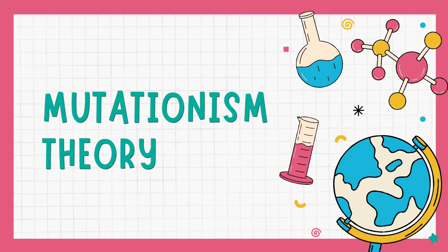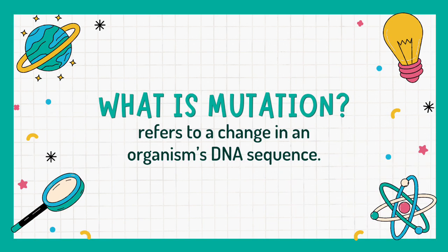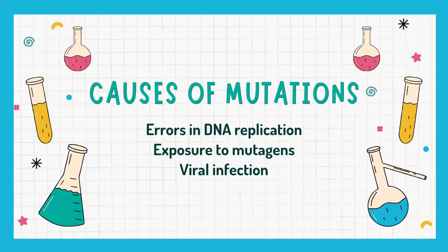One theory of evolution is mutationism. But first of all, what is mutation? Basically, it refers to a change in an organism's DNA sequence. Mutations can occur from errors in DNA replication during cell division, exposure to mutagens, or a viral infection.